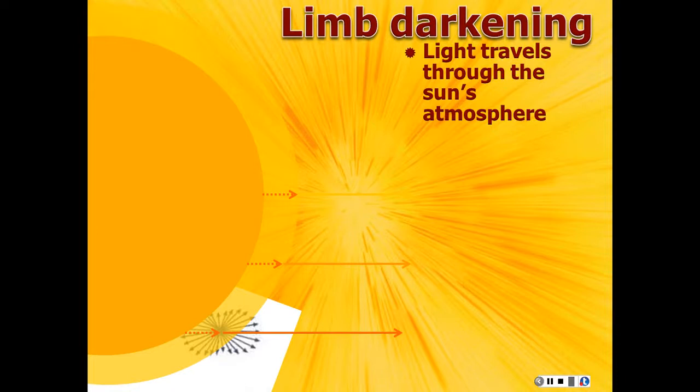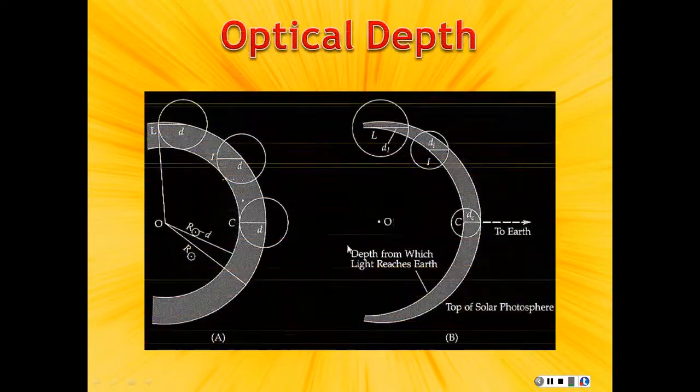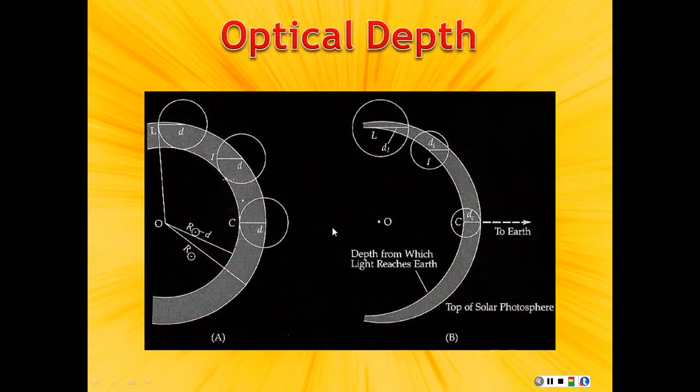And so what you get is that you're actually looking at something where here, you're actually looking all the way down this far. And here you're only looking from about this far. So this is kind of another schematic of how that looks. So that when we're looking, you will always see that the center will look hotter and brighter and the edges will be darker and cooler.